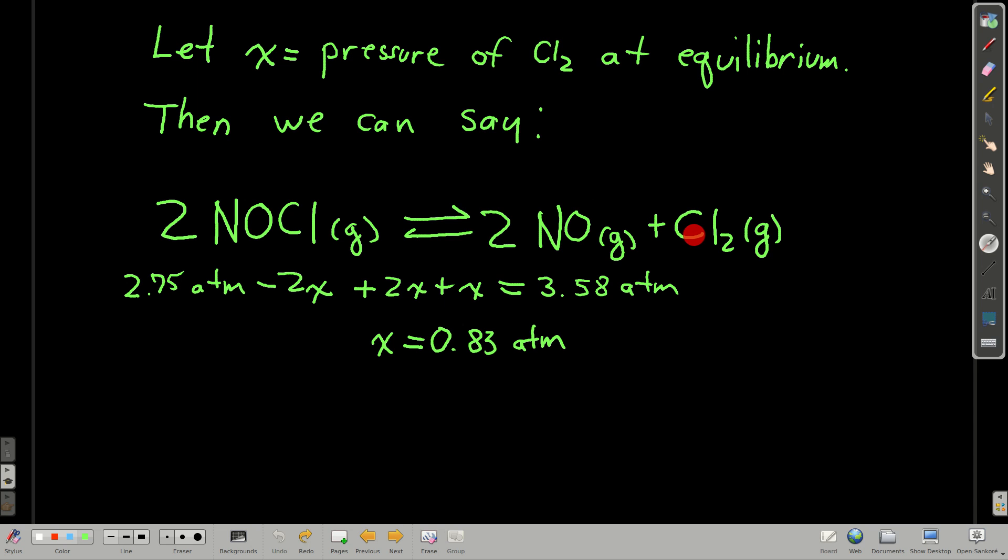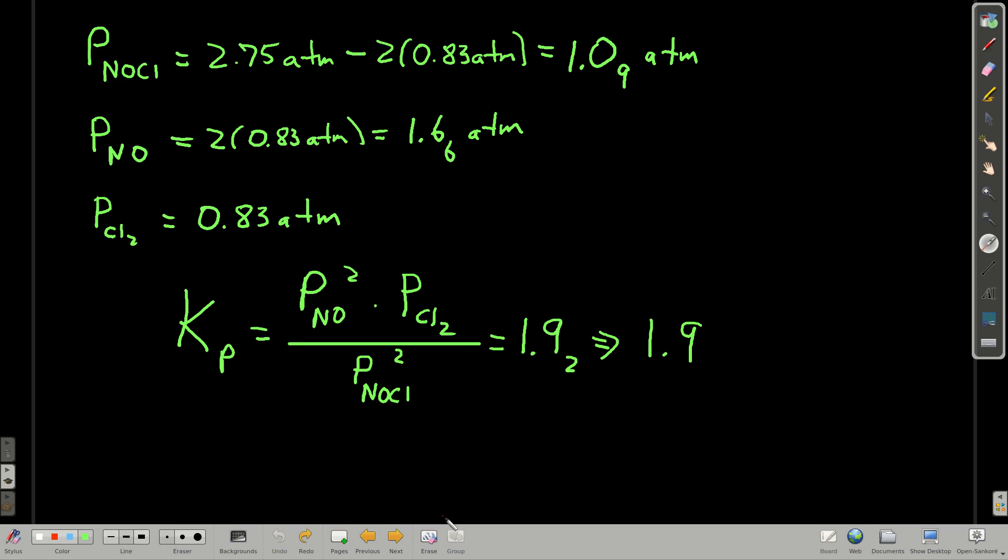Please check my algebra. So now we know X, which is the partial pressure of chlorine at equilibrium, which means we know the partial pressure of nitrosyl chloride, 2.75 minus 2 times X, and the partial pressure of nitrogen monoxide, 2 times X, 2 times 0.83. Now that we know those, we can plug into Kp. So partial pressure of nitrosyl chloride is 2.75 minus 2X is 1.1 or so atmospheres. Partial pressure of nitrogen monoxide is 2 times X, or about 1.7 atmospheres. And partial pressure of chlorine is 0.83 atmospheres, or X.